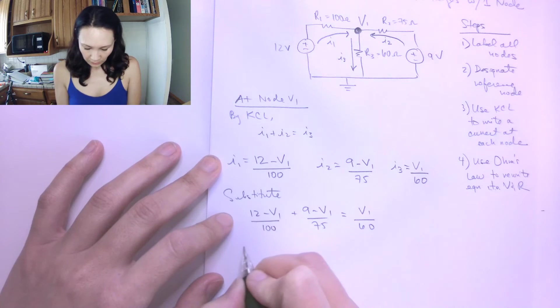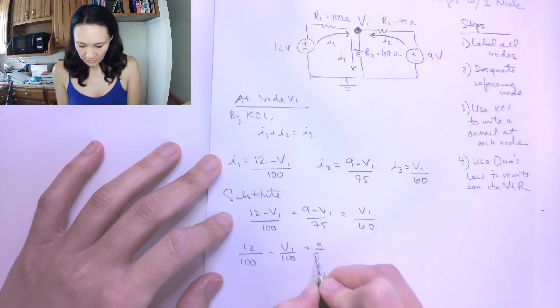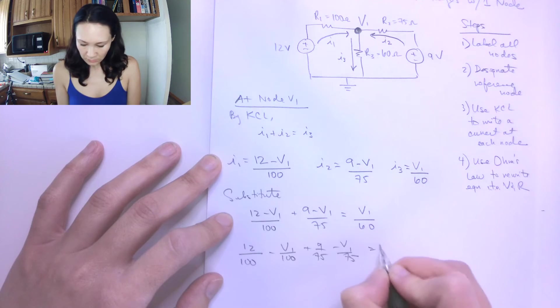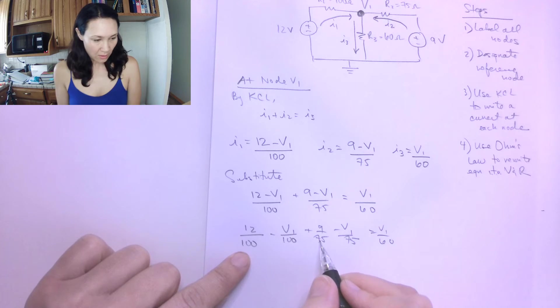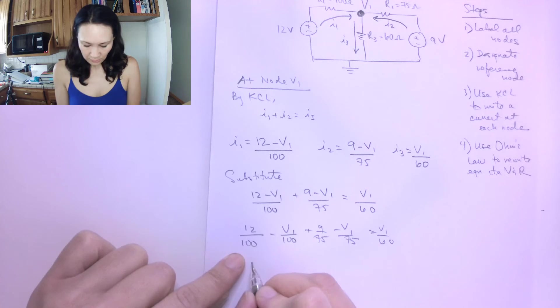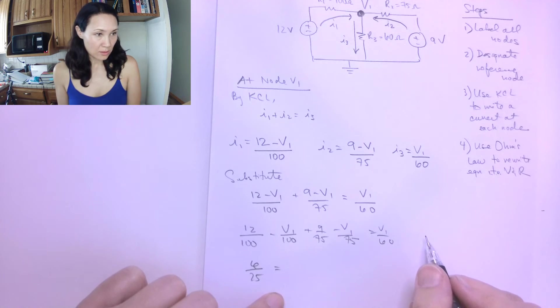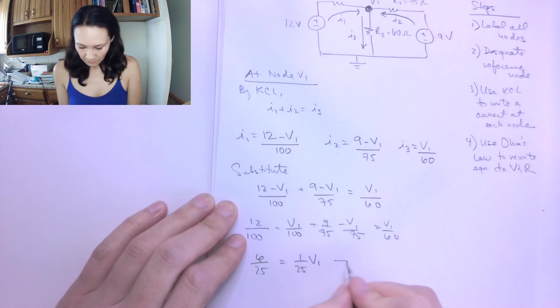Now, I'm going to do a little bit of arithmetic. So 12 over 100 minus V1 over 100 plus 9 over 75 minus V1 over 75 is equal to V1 over 60. So that means that these are my constants. These are going to combine to be 6 over 25. And when I bring all my V1 terms over to this side of the equation, I'm going to get 1 over 25 times V1. So this implies that V1 is equal to 6 volts.